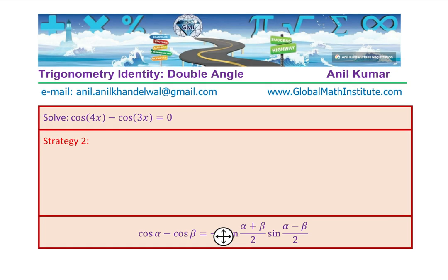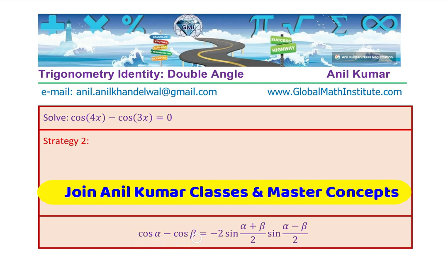Here is strategy number 2. I hope you are appreciating our approach. It is a learning process. Many students get stuck with strategy 1. Strategy 2 is this formula, which is cos alpha minus beta is minus 2 cos alpha plus beta over 2 sine alpha minus beta over 2. This is not a difficult formula to derive. Most of you know it.